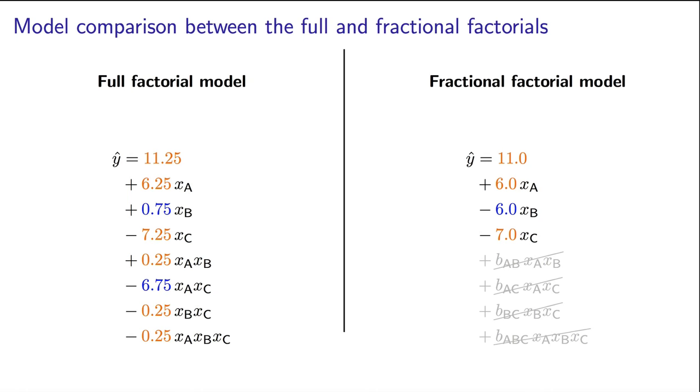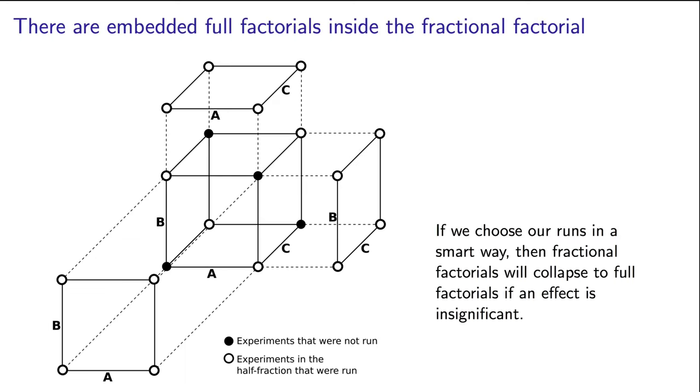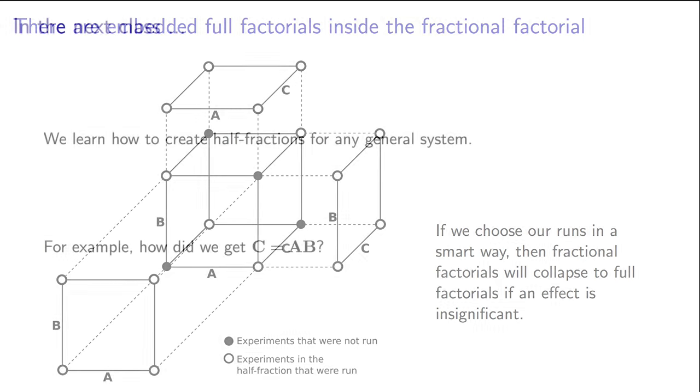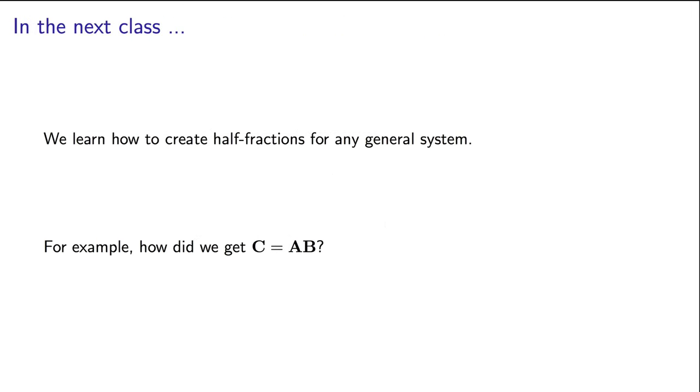That's where we're going to leave the class today. We've shown you the end point, that when you do half the work, you lose a bit of accuracy in your model, but there's a great built-in backup strategy in the clever selection of which half of the work to do. I guess you could say, at least be smart about which half of the work to do. In the next class, we're going to learn the technical terms and the mechanics around creating these half fractions.